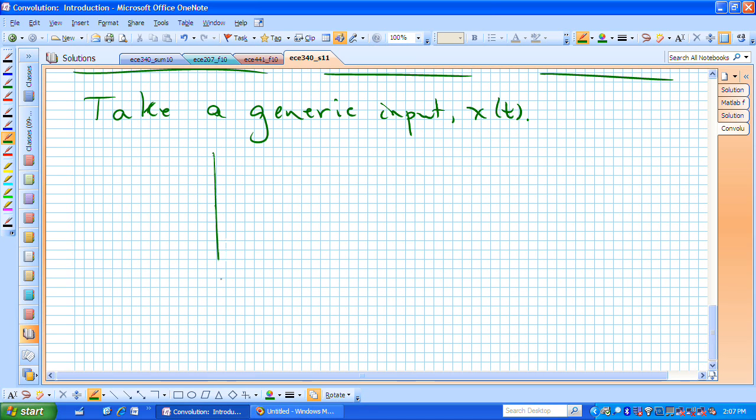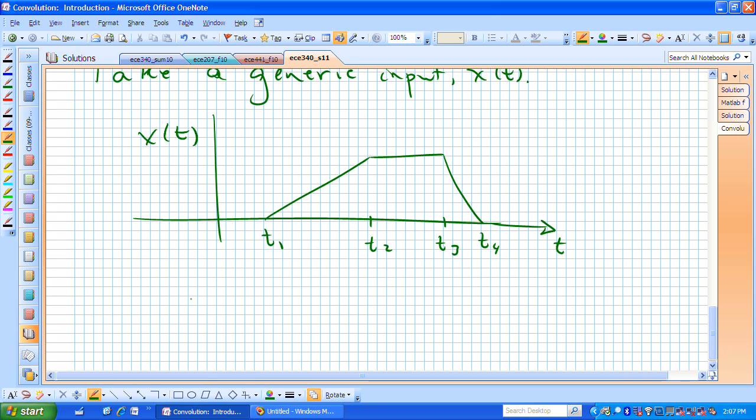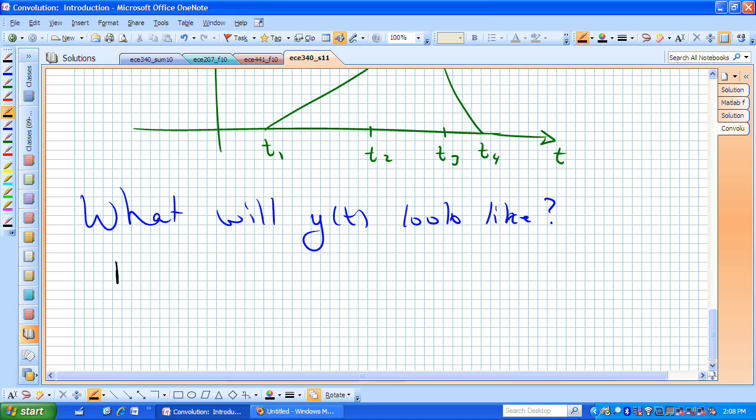Again, to give us something to think about or visualize, let's just say that we have something like that for our system. Let's label these points so that we have specific time instances to think about, and here is our generic input x of t. To get us started, what we want to do is try to determine, based on this input that's now applied to our system that has an exponentially decaying impulse response, what will y of t look like?